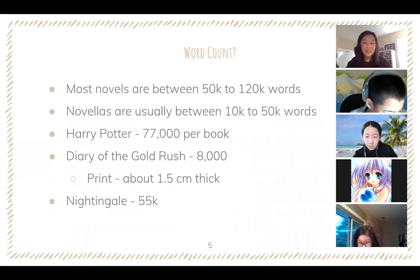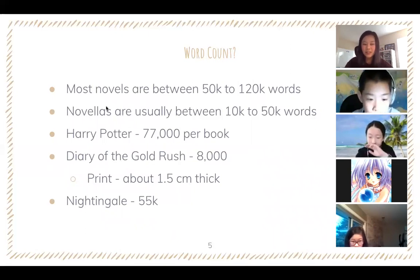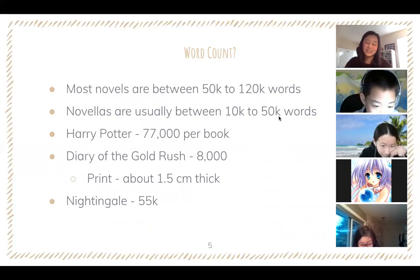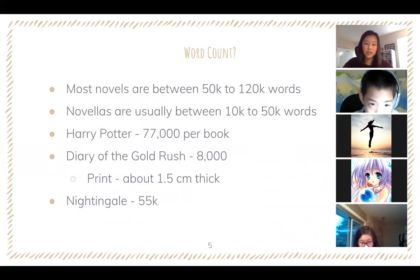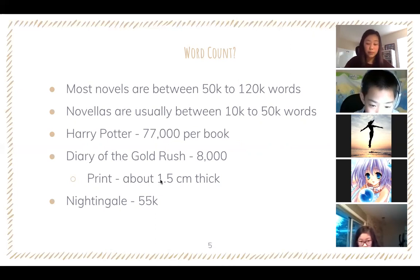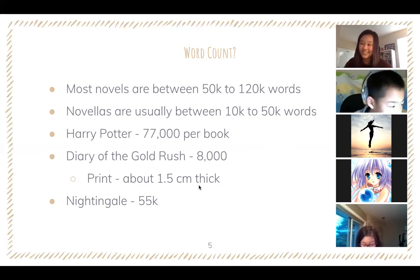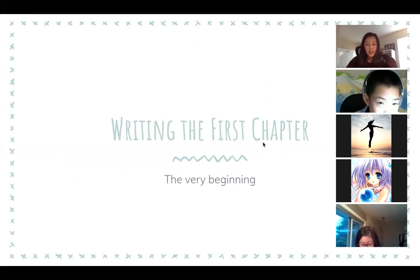For word count reference: most novels are between 50,000 and 120,000 words; novellas are between 10,000 and 50,000 words. Harry Potter's Sorcerer's Stone is about 77,000 words. My book Diary of the Gold Rush is about 8,000–9,000 words and printed about 1.5 centimeters thick. Nightingale at about 55,000 words printed roughly an inch thick. These are just reference points to help you understand scale.